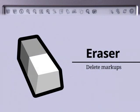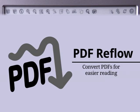To delete markups, press the Eraser icon on the reader toolbar, and then touch any unwanted highlight, note, or attachment. Press the PDF Reflow icon to convert a multi-column PDF into a single column, or to make it text size adjustable without expanding the entire page.